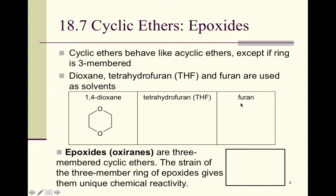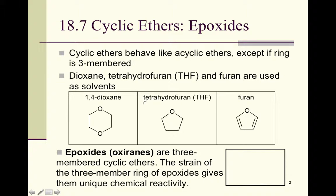Tetrahydrofuran and furan are both commonly used as solvents. In fact, THF is what you're going to see over reaction arrows very commonly. Furan also has oxygen in the five-membered ring, but it has two carbon-carbon double bonds. The difference between furan and tetrahydrofuran is the number of hydrogens — 'tetra' meaning four, so tetrahydrofuran has four more hydrogens than furan.